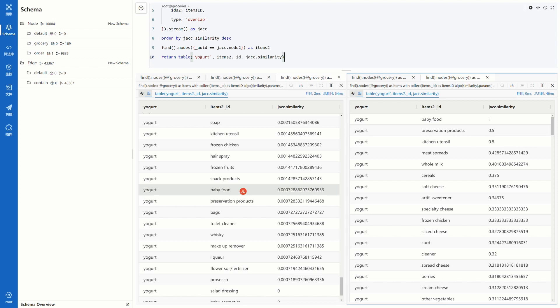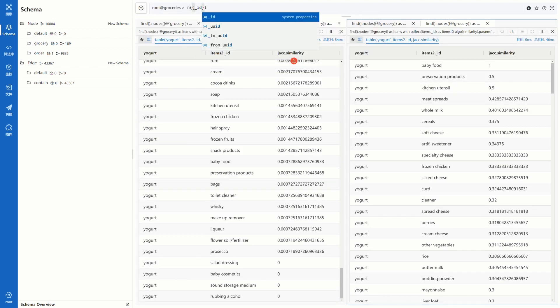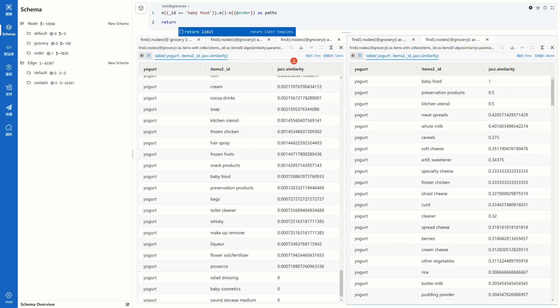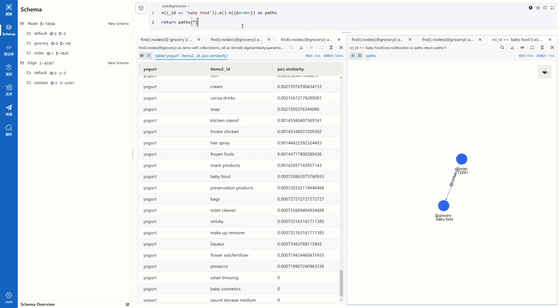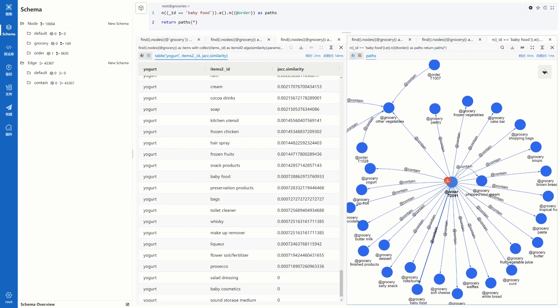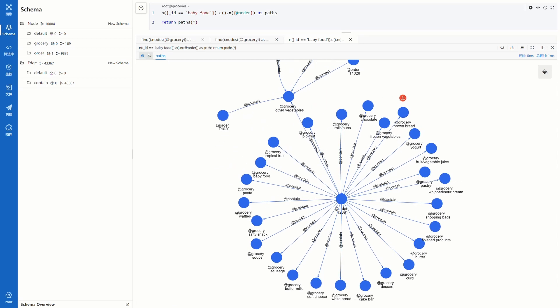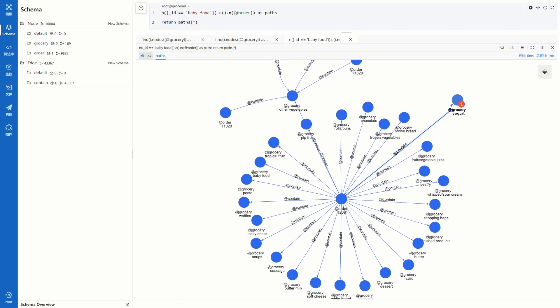We could check it by using a path query. Start from baby food node, go through an edge and reach an order node. Let's see how many paths we could find. There's only one. That means baby food is only contained in one order. And if we spread from this order to see all the groceries that are contained in one order, of course, we find yogurt. And now we understand why baby food has overlap similarity of one with yogurt.